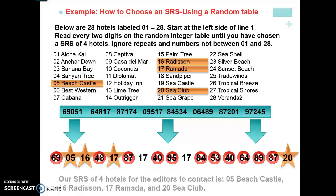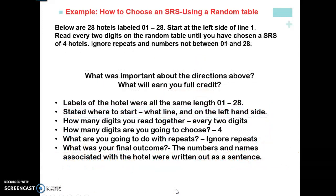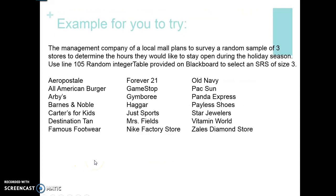Here are the four hotels — make sure you state what the hotels actually are. We've chosen Beach Castle, Radisson, the Ramada, and the Sea Globe. To earn full credit on the AP exam: hotel labels need to be the same length; state where you started; state how many digits you read together — specifically every two digits; state how many you're going to choose — four, for a simple random sample of four; state that you're ignoring repeats; and state your final outcome — the numbers you chose and the names associated with the hotels.